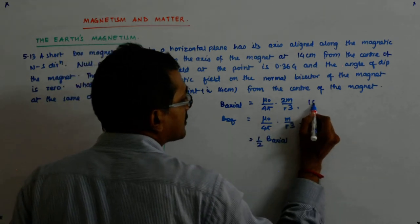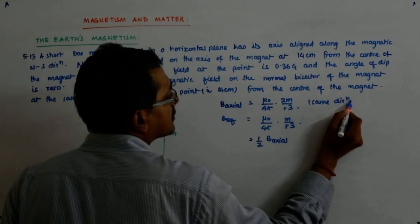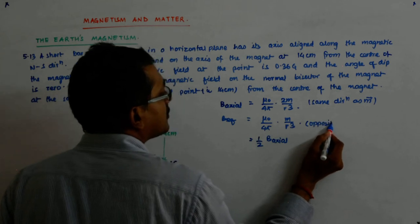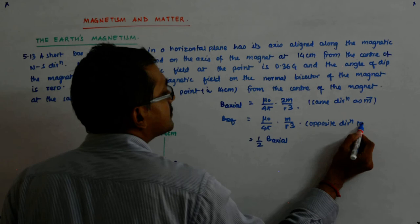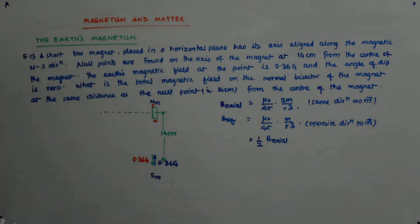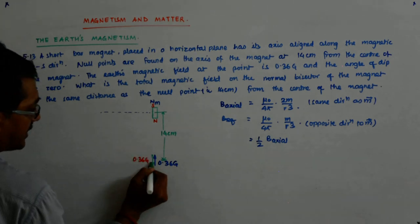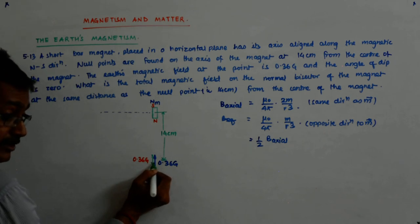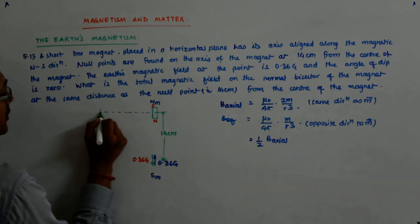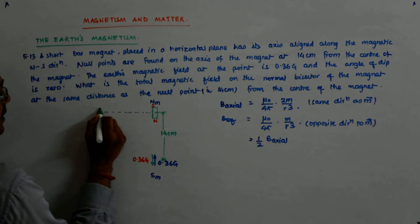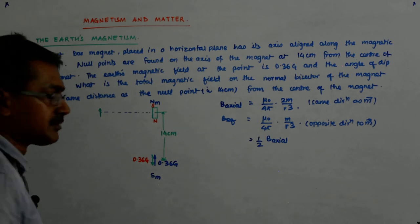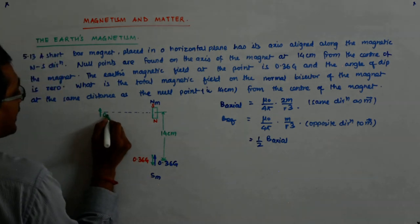What is the direction? Here is the same direction as m. Here, opposite direction to m. This is opposite direction to m. So this green was the field due to the magnet. Now, what is the field due to the magnet here? It will become half of it and its direction will change. Do we understand that? So it will become 0.18 Gauss.